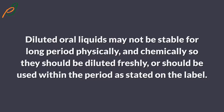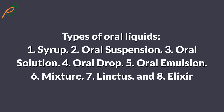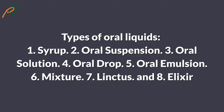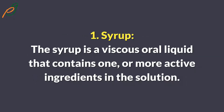Types of oral liquids: one — syrup; two — oral suspension; three — oral solution; four — oral drop; five — oral emulsion; six — mixture; seven — linctus; and eight — elixir. Syrup is a viscous oral liquid that contains one or more active ingredients in solution.